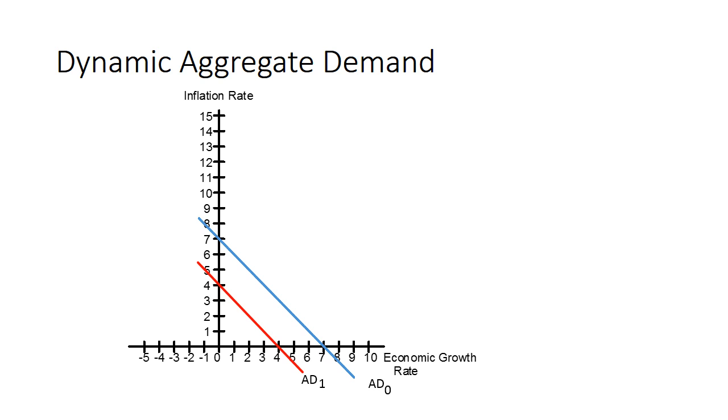That is, it used to be that when the economy grew at a rate of 0%, inflation would be 7%. But now, if the economy grows at a rate of 0%, inflation will be only 4%, because the central bank is printing money more slowly.